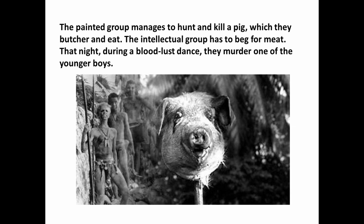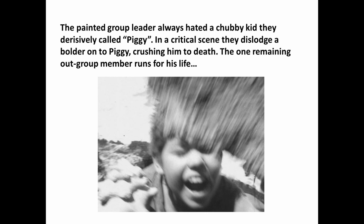Tensions are very high at this point, and there's a question about whether the painted group will take over everything. The leader of the painted group always hated one of the kids they derisively called Piggy. In a critical scene, they dislodge a very large boulder on top of a cliff and push it down on Piggy, crushing him to death. The one remaining out-group member runs for his life, and just as he's about to be murdered, the rescue comes. You never actually see the adults — just their feet. It's entirely shot from the point of view of the children in this alternate civilization.